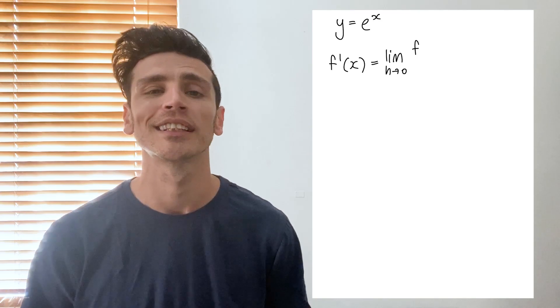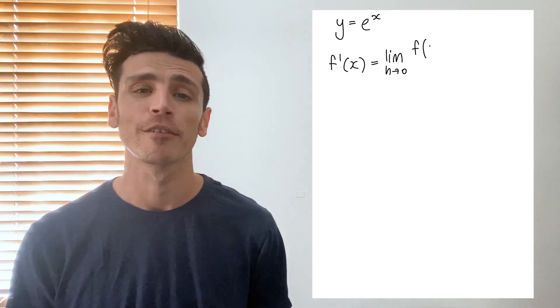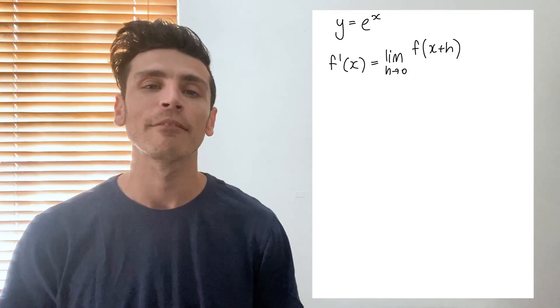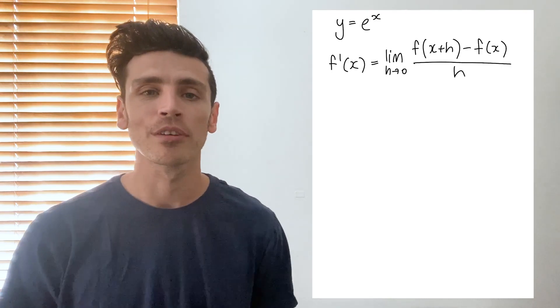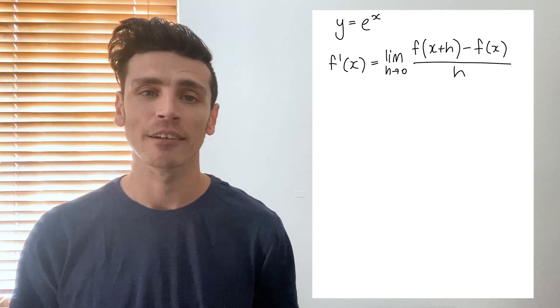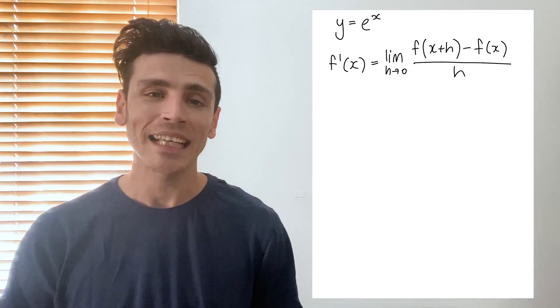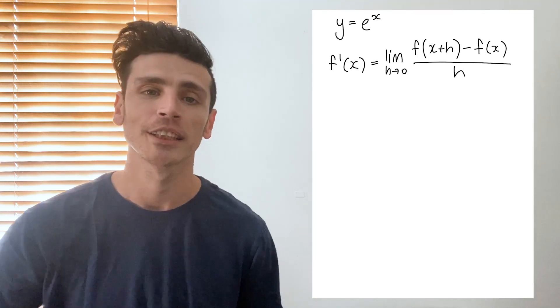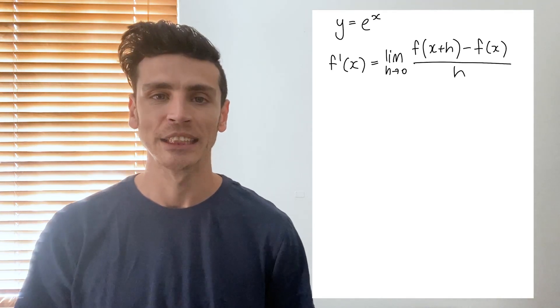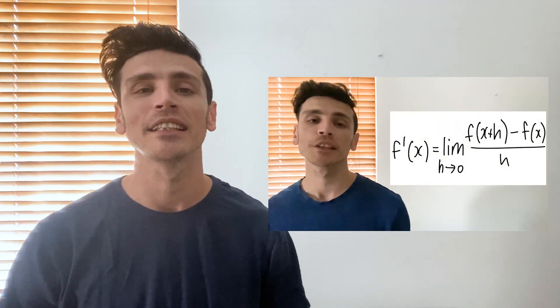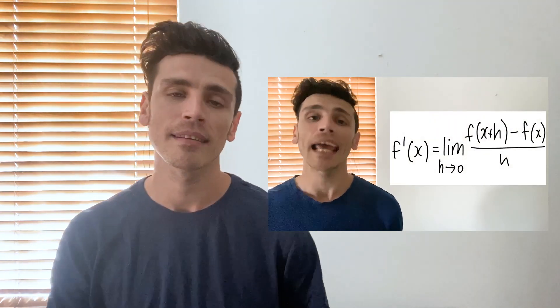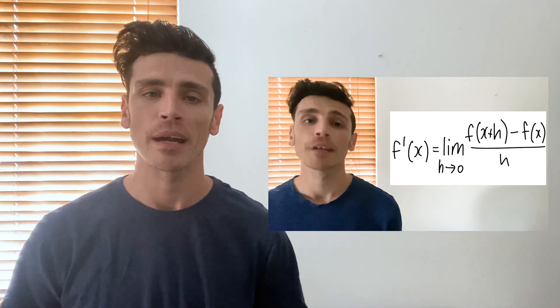We're going to use the limit definition of a derivative, and this formula is given to us as: the derivative of f(x) is equal to the limit as h approaches 0 of f(x+h) minus f(x), all over h. In a previous video I went into more detail about how to use this formula, so if you haven't seen that one do check it out.